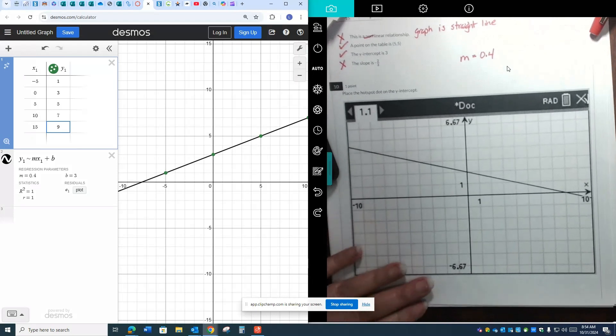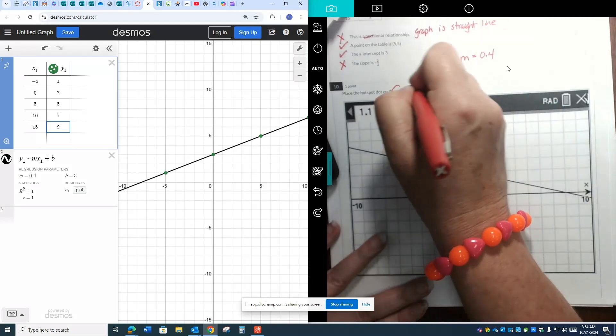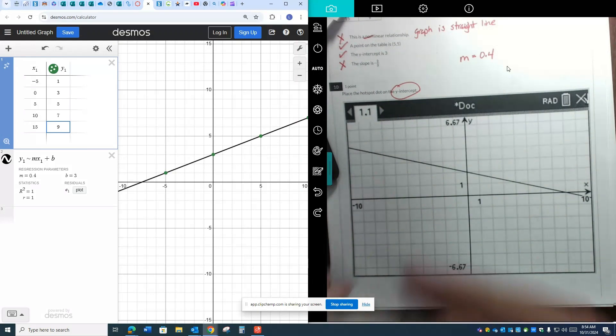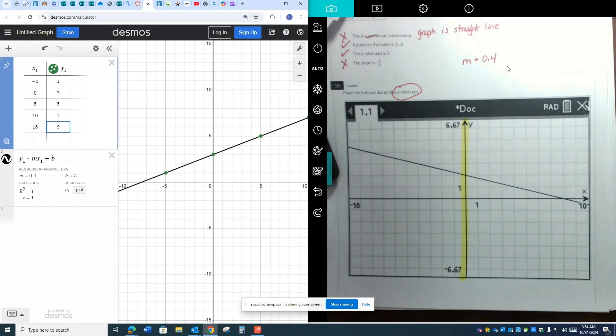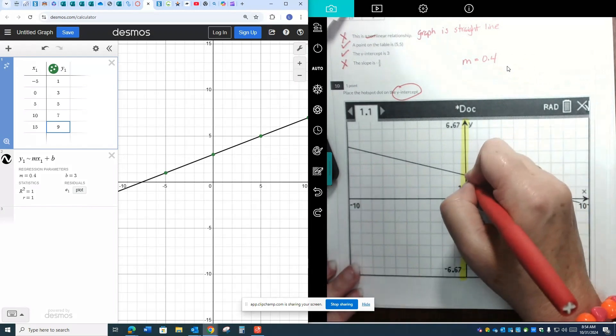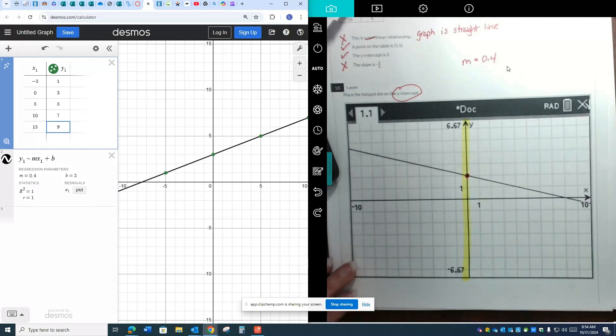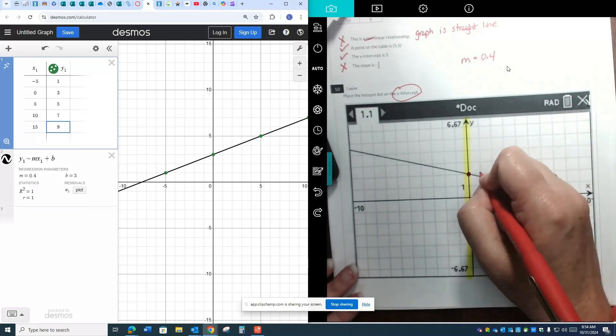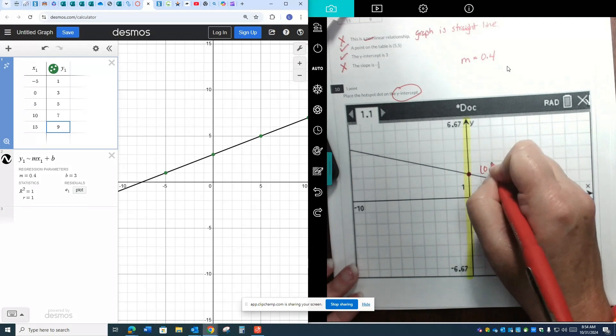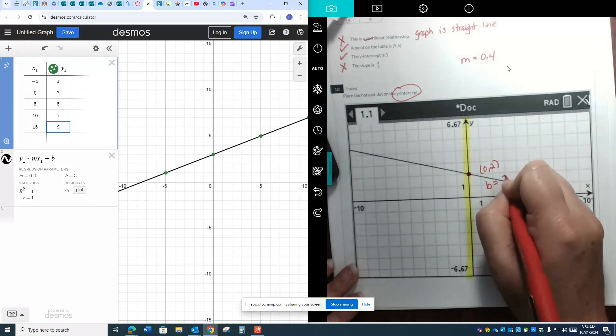Number 10, you were supposed to place a hot spot on the y-intercept. Again, where does the line cross the y-axis? There's my y-axis. It is crossing right there. So you should put your hot spot on that point. And by the way, the coordinates of this point are 0, 2, which means my b would equal 2.